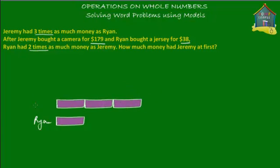So three blocks of money for Jeremy. This is Ryan's money below and this is Jeremy's money — three purple blocks. What's next is that Jeremy bought a camera for $179, so Jeremy made a purchase and spent $179. Let's say that this shaded part here is how much money Jeremy spent — $179. I don't know exactly how much it was; I'm just taking a guess with this shaded region.